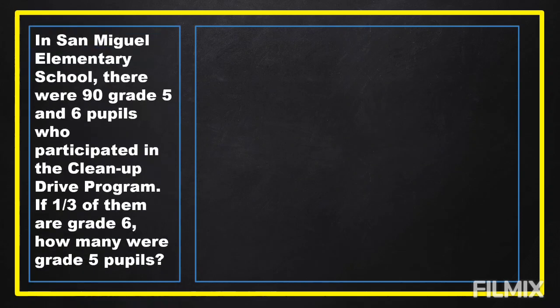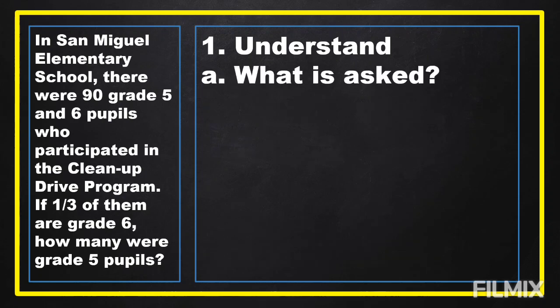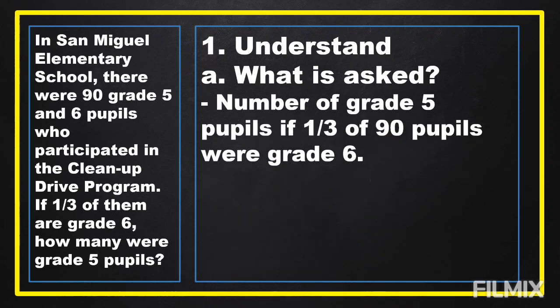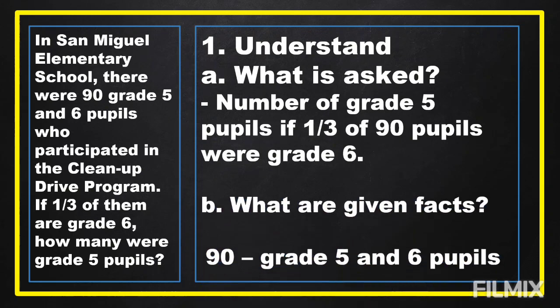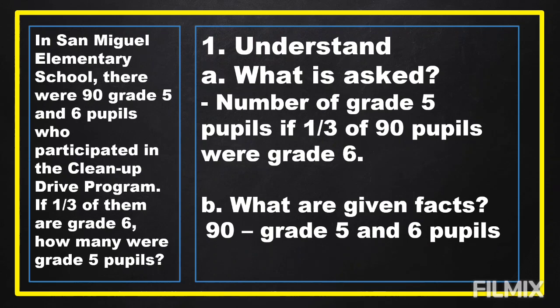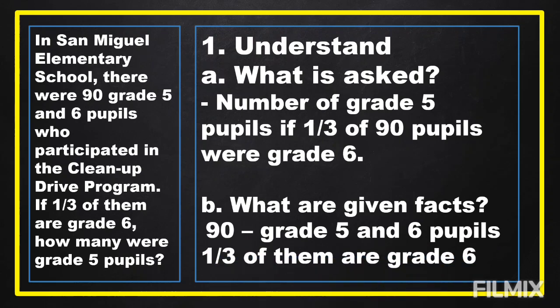To answer our problem, first we are going to understand. We will know what is asked in the problem. It is asking for the number of grade 5 pupils if one-third of 90 pupils were grade 6. What are the given facts? 90 grade 5 and 6 pupils, and one-third of them are grade 6.